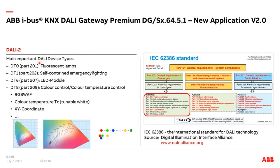DALI 2 defines several device types. Device type 0 is part 201 for fluorescent lamps, similar to device type 6 (part 207) for LED modules. Device type 1 is for self-contained emergency lighting converters. Today we focus on DALI device type 8, part 209, for color control or color temperature control — covering typical color temperature (TC), tunable white, RGB, RGBW, or XY coordinates, all specified in part 209.